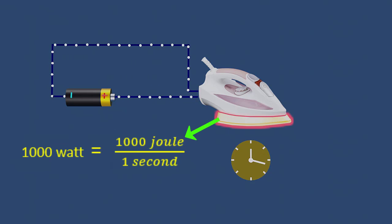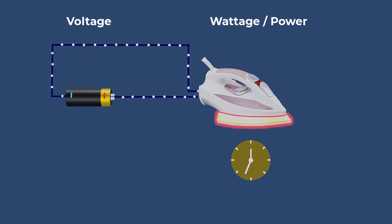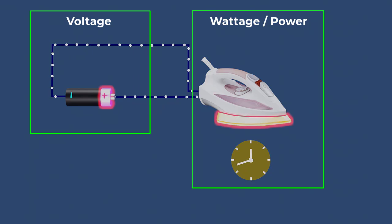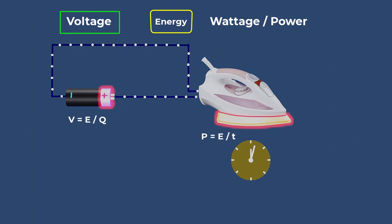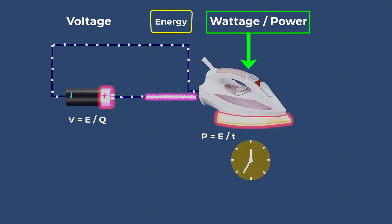Both voltage and wattage represent electrical energy, but they play different roles. Voltage is related to the source that provides electrical energy to each coulomb of charge, while the wattage is related to the device that consumes the electrical energy each second.